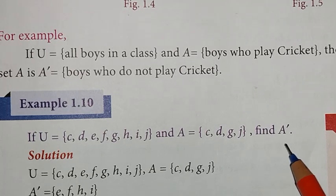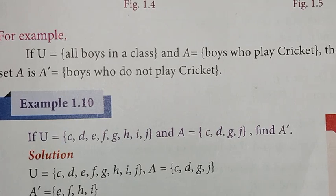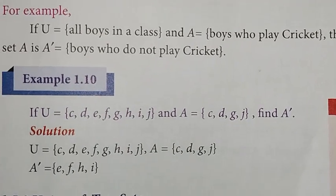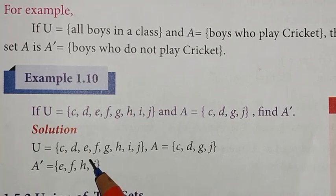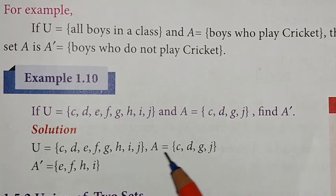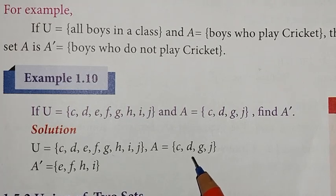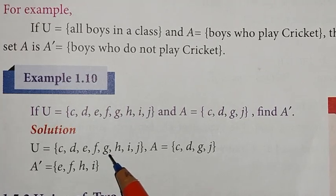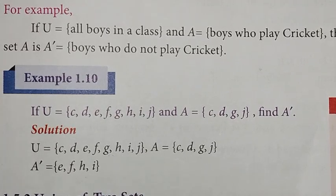So, A' means whatever is in the universal set that is not in A. The elements that are not in A are e, f, h, i. So universal set minus A equals A'.